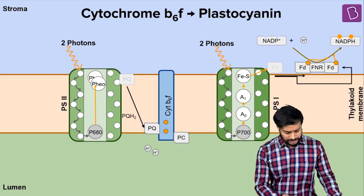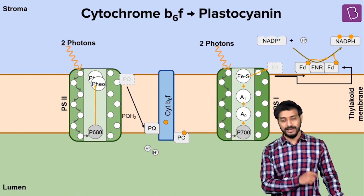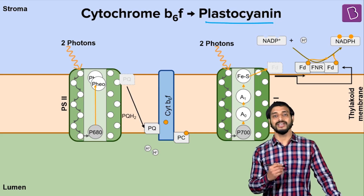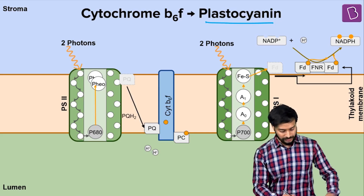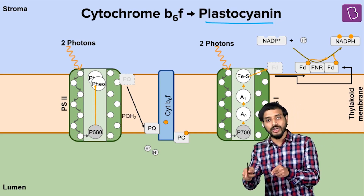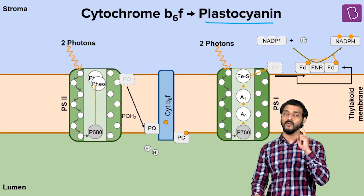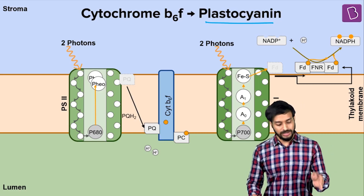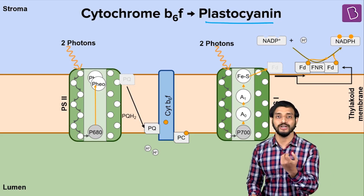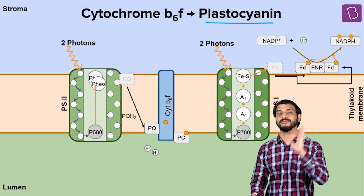The electron transfer happens from cytochrome b6 to cytochrome f, and from there, plastocyanin (PC) receives the electrons. This is all based on redox potential — the one concept you must understand. Molecules are arranged based on their affinity for electrons, and electrons move from low redox potential to high redox potential.